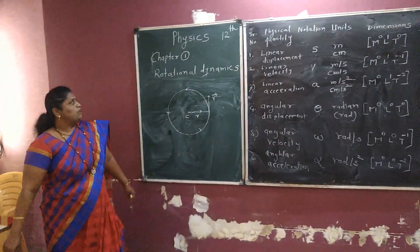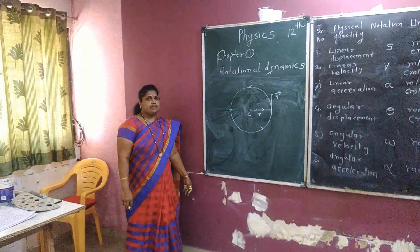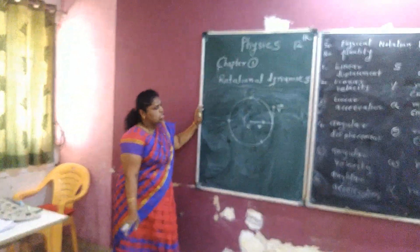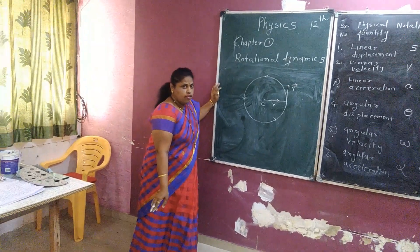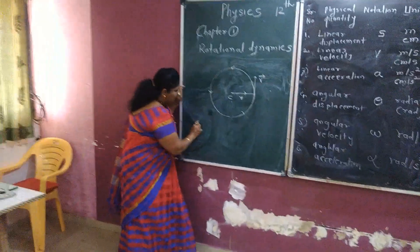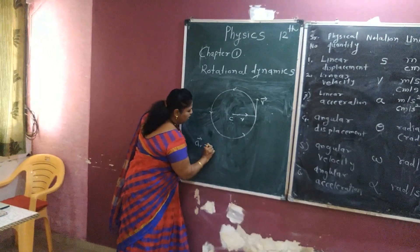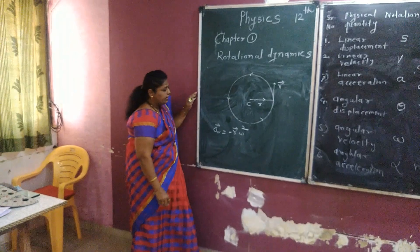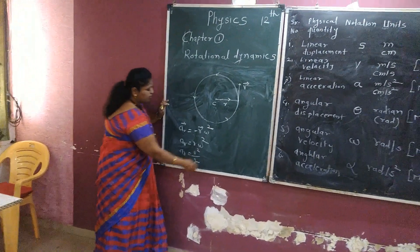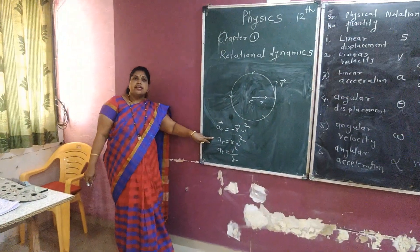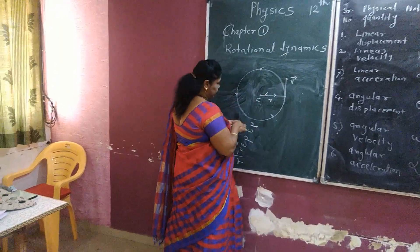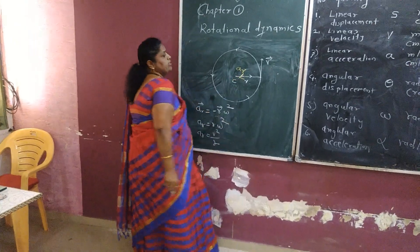Also, when a particle moves in circular motion, it has a radial acceleration — that is, centripetal acceleration. Radial centripetal acceleration is the acceleration of a particle directed towards the center of the circle along the radius. It is denoted by A_R. It is given by −R⃗ω² in vector form. In scalar form, A_R = Rω² or A_R = V²/R. Radial acceleration is directed towards the center.